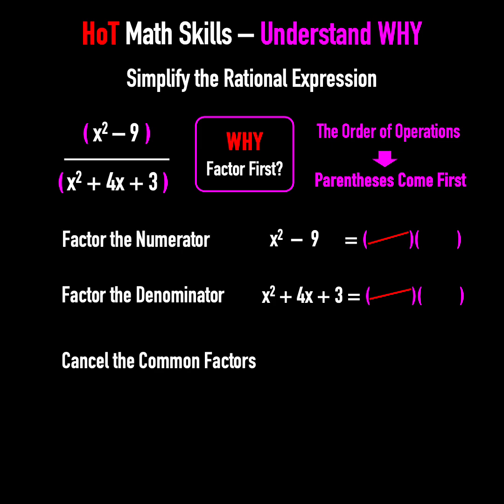Factor the numerator. This is a difference of squares, so it's x plus 3 times x minus 3.